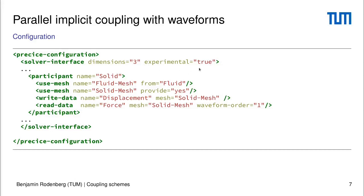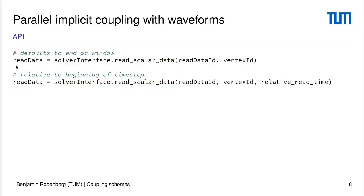We are using this special experimental flag to declare this feature as experimental, meaning it's not considered stable yet because we still might want to change things. The other important thing about our new API is how you call it from your application code. The big change is that you don't call read scalar data just with the read data ID and the vertex ID — additionally, you provide a relative read time. This means you can now sample your interpolant at any place in time within the current time window. We say relative read time because if you set this to zero it's the beginning of the current time step, and if you set it to the end of the window it's the end of the window.